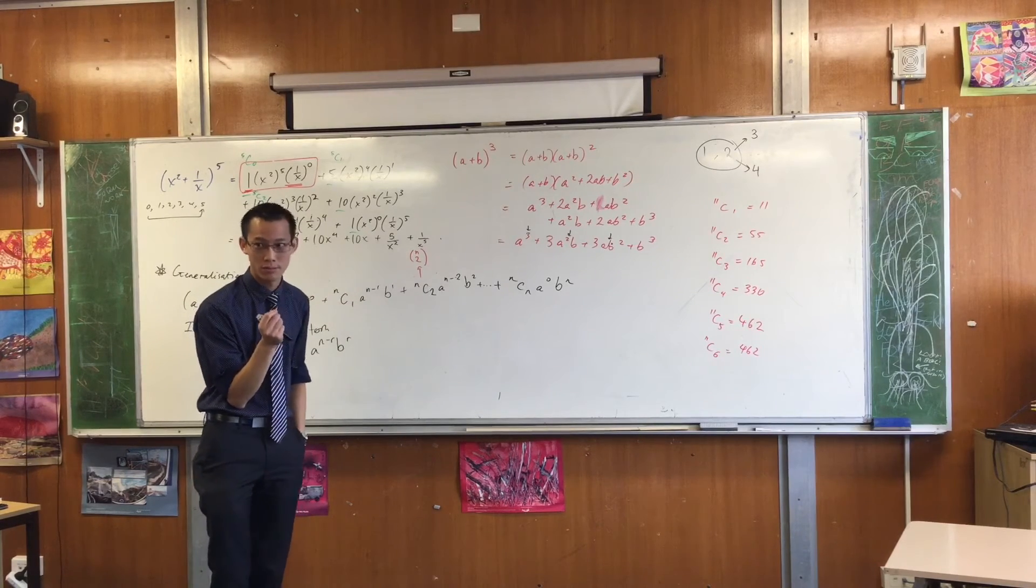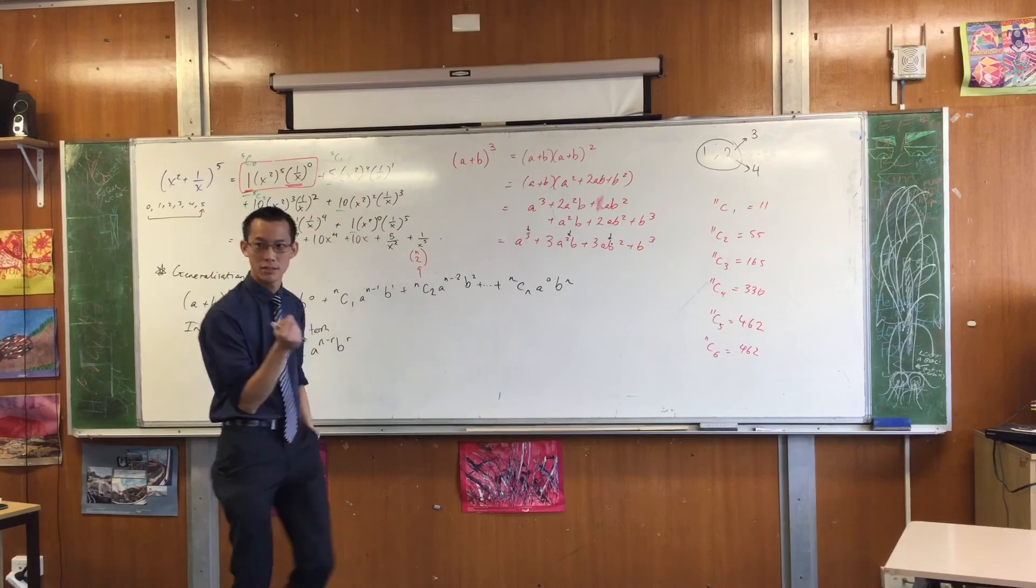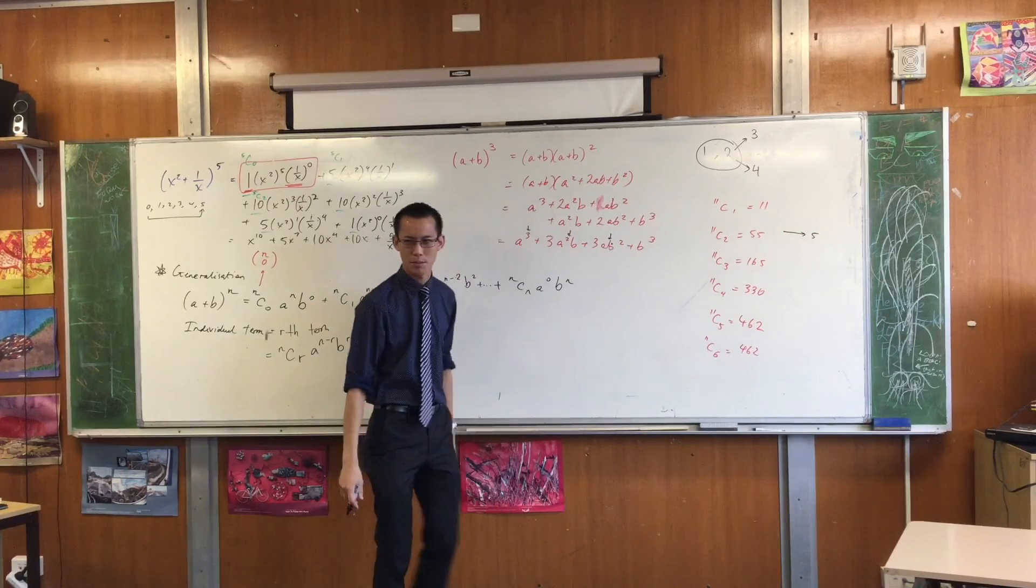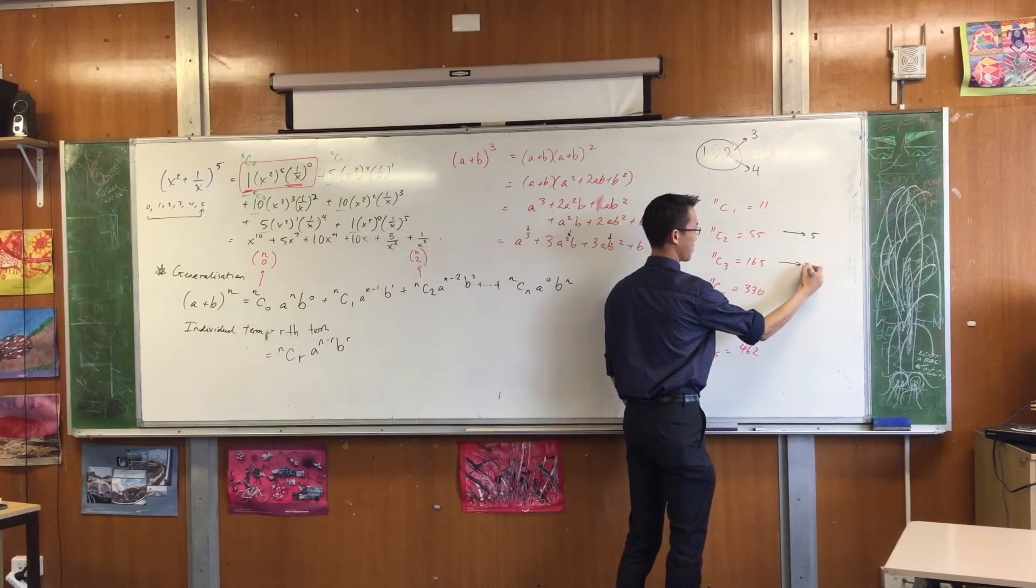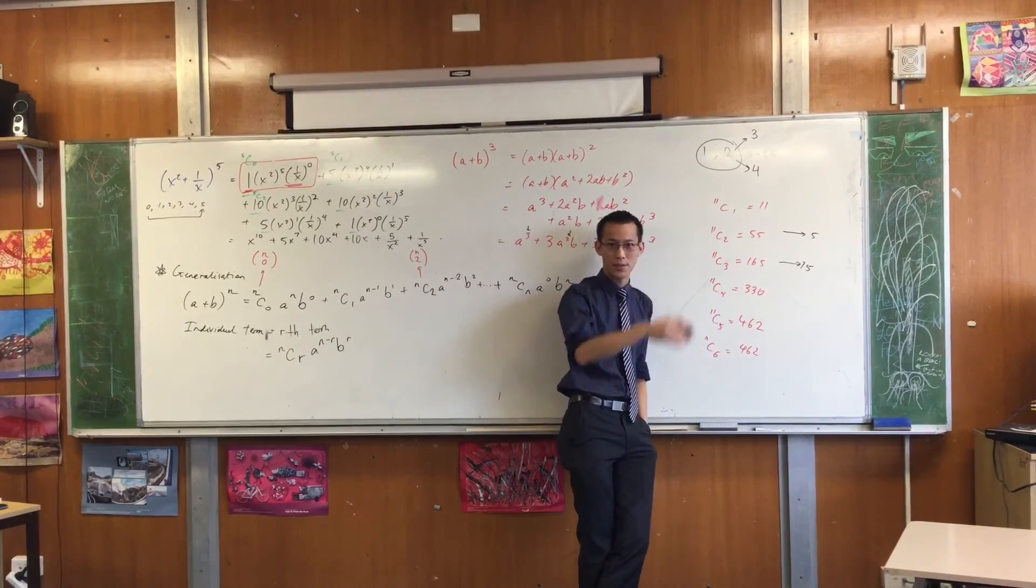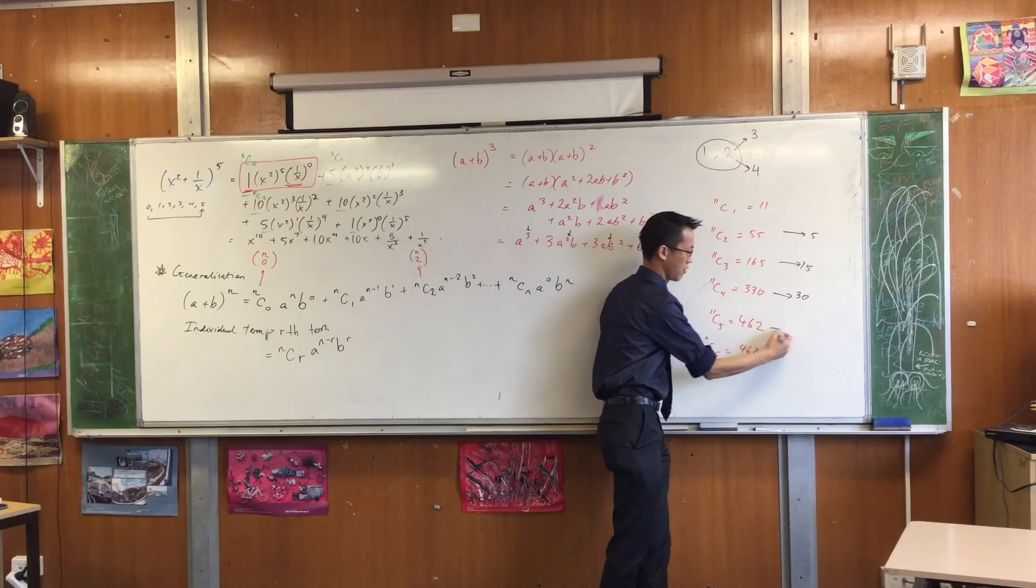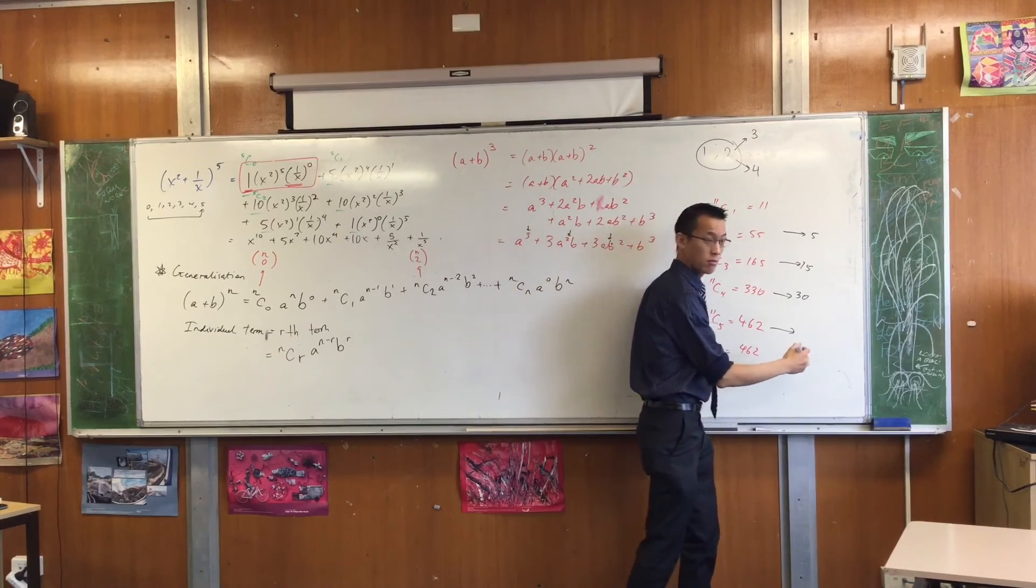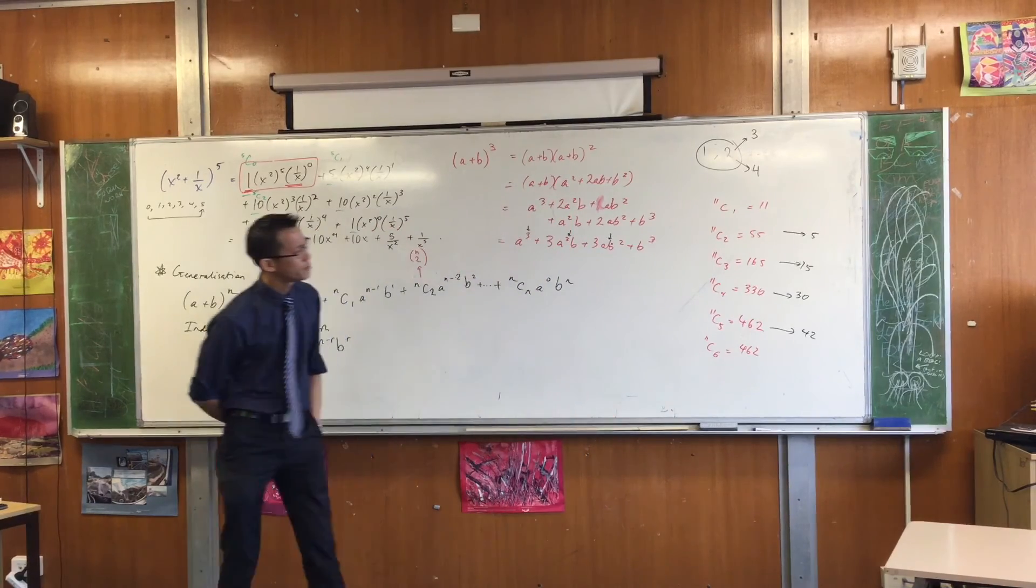What's 11 divided by 1? Sorry, 11 divided by 11. That's 1. What's 55 divided by 11? What's 165 divided by 11? Yeah, it's 150 plus 15. 330, that's an easy one. That's 30, right? 462 divided by 11. 42. 42? 42. Because it's 420 plus 42.